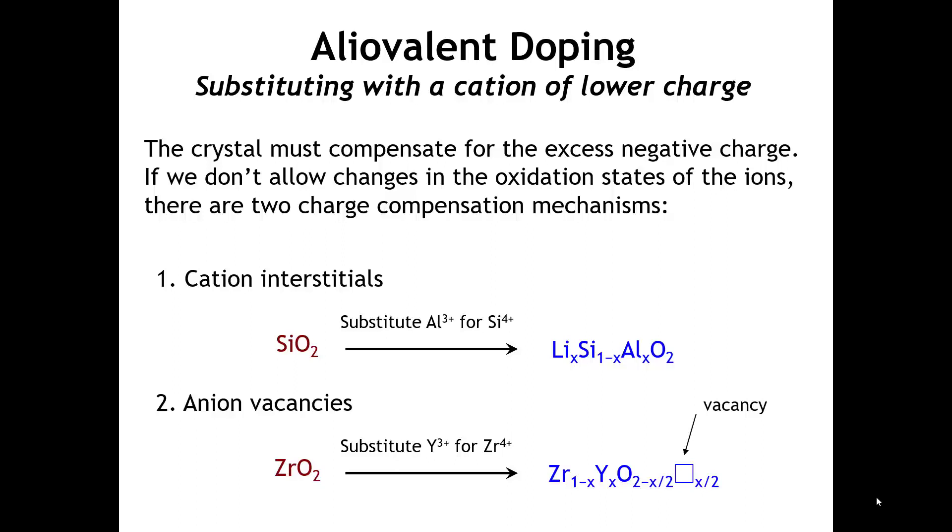When we were talking about zeolites, we saw that when we have enough of these cation interstitials and the cations get large enough, this leads to a change in the topology of the network. Instead of getting a dense SiO2 structure, we get zeolites that have pores in them. That's not always the case—oftentimes there might be enough room to accommodate the interstitials without disturbing the crystal structure.